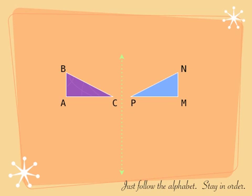Likewise, if we have another pre-image and image, A corresponds to M, B corresponds to N, and C corresponds to P. If you're not sure, just follow the alphabet — stay in order. Usually they just stay alphabetical, so M, N, P is alphabetical order, just as ABC is alphabetical order.